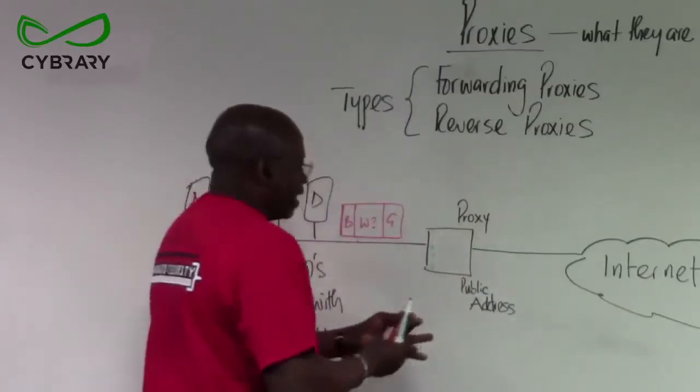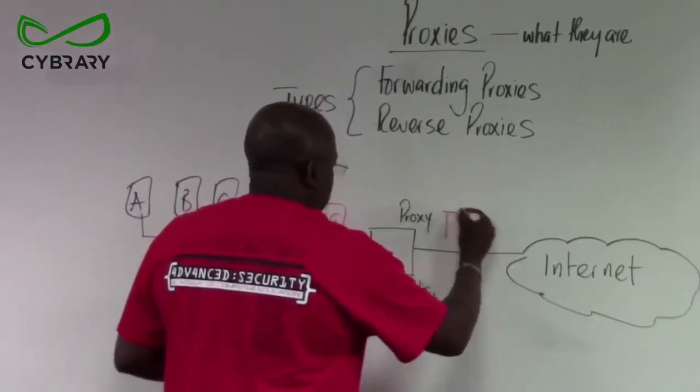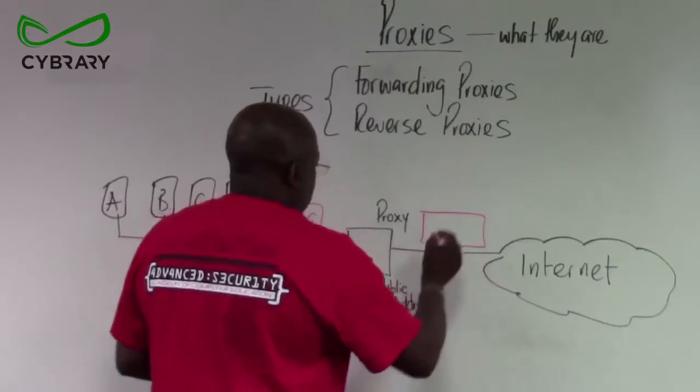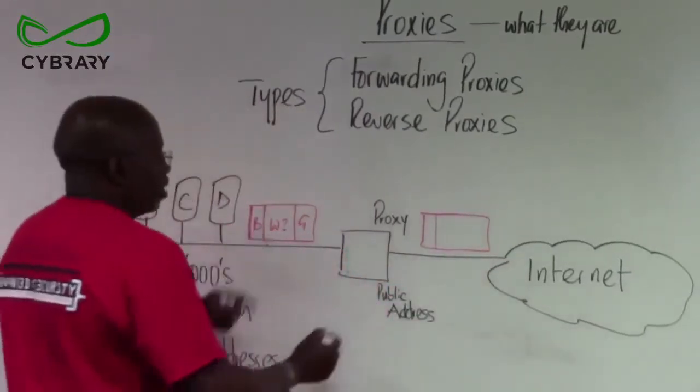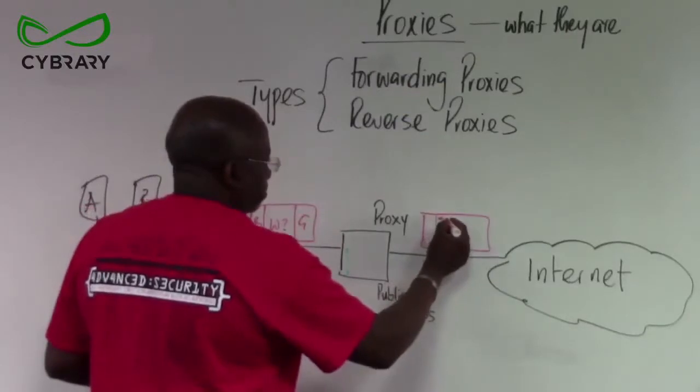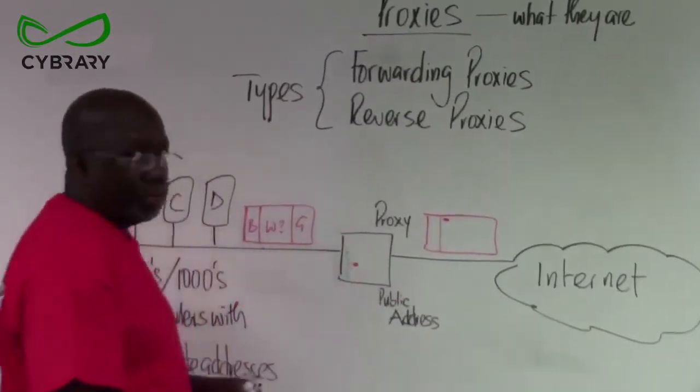The proxy would process that packet in this fashion. Who is it coming from? Oh, it was coming from B. So, the proxy would flag the message. Okay, that message, that flag means it came from computer B.